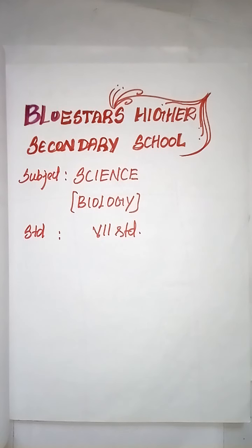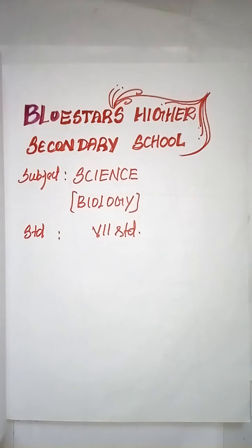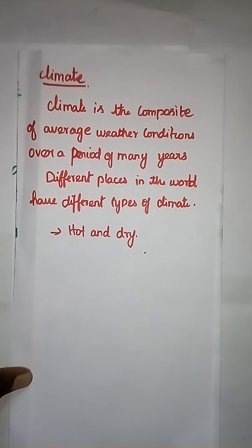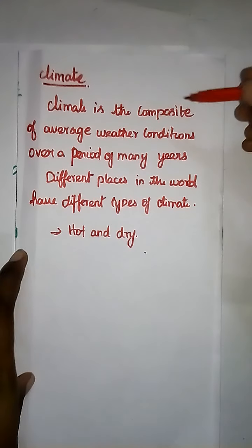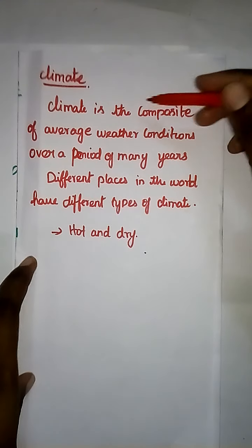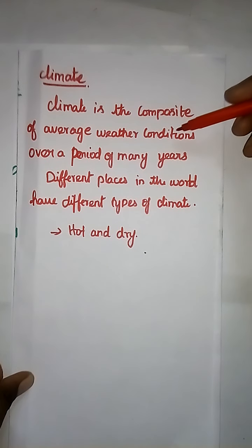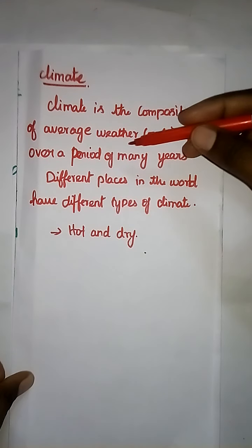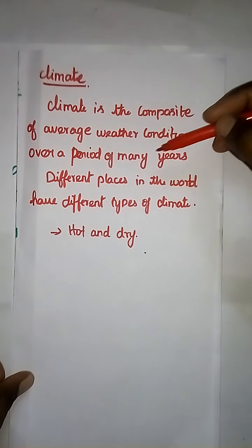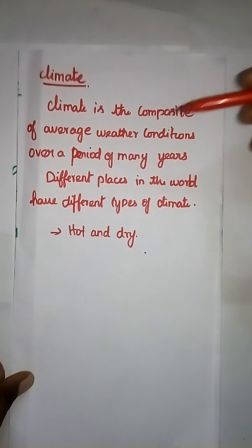In today's class, we are going to see the next subtopic, which is Climate. What do you mean by climate? Climate is the composite of average weather conditions over a period of many years.